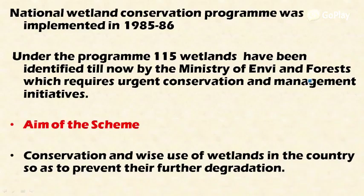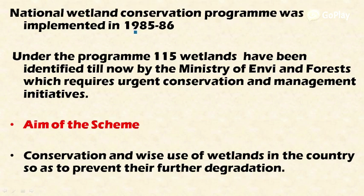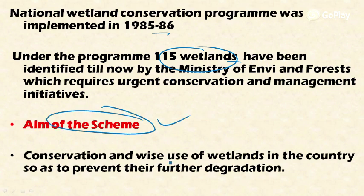In this video, let's learn about the National Wetland Conservation Program and important wetlands present in India. This program was implemented to protect and conserve important wetlands in India. It was implemented in 1985, and under this program, 115 wetlands have been identified by the Ministry of Environment and Forest. These wetlands require urgent conservation and management. The aim of the scheme is to conserve and sustainably use wetlands so as to prevent their further degradation.